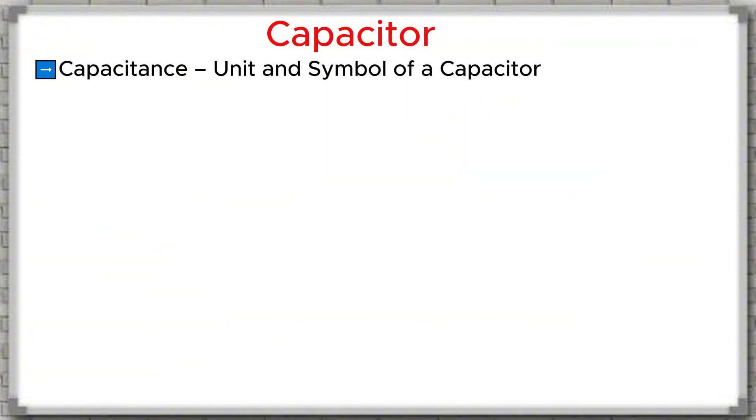Capacitance - Unit and symbol of a capacitor: What is capacitance? Capacitance, symbol C, is a quantity that describes the ability of a capacitor to store electric charge on its two plates when a voltage difference is applied across them. Simply put, the larger the capacitance, the more charge the capacitor can store at the same voltage level.